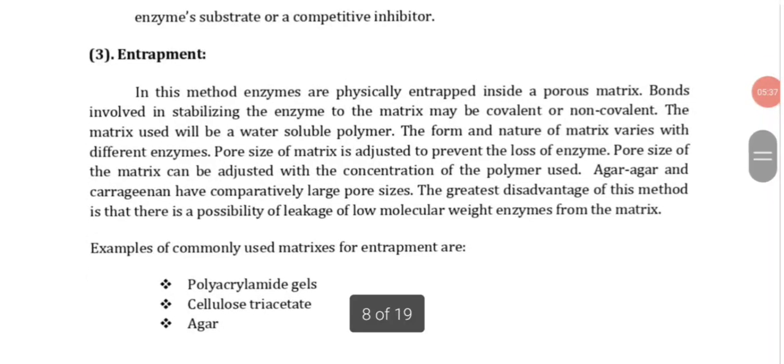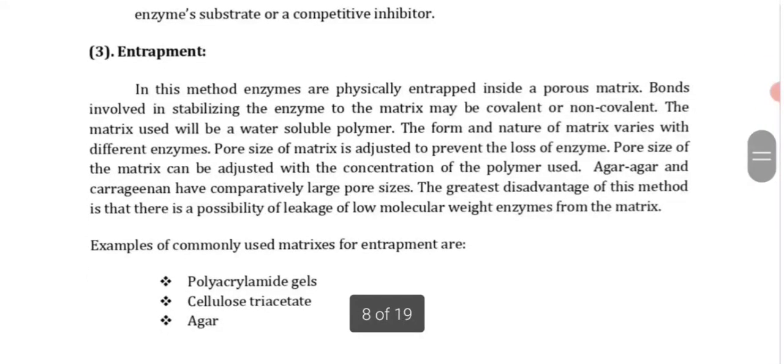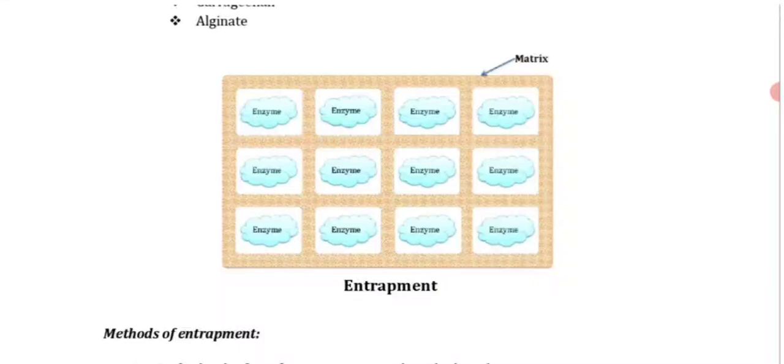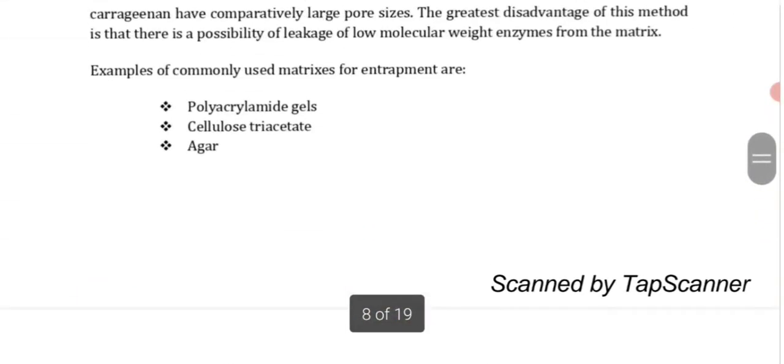Next method is entrapment. In entrapment, enzymes are physically entrapped inside a porous matrix and the bonds involved in the stabilization of the enzyme to the matrix may be covalent or non-covalent. Matrix used will be a water soluble polymer. The enzyme is trapped in the matrix.